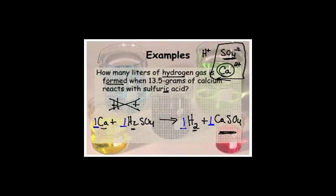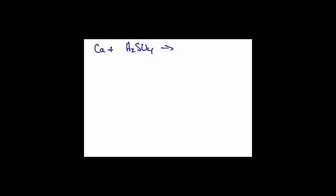Now we have 13.5 grams of calcium. I'm going to rewrite this. So I've got calcium plus sulfuric acid, all one-to-one ratios, makes H2 plus calcium sulfate. And we had 13.5 grams of calcium. So now I'm going to write down what I know underneath, and I want to convert to liters of hydrogen gas. It doesn't give us any conditions — no pressure or temperature — so it's a pretty safe assumption that this is going to be at STP. Normally it'll tell you that, or it'll give you some temperature and pressure. Just go ahead and assume STP for today.